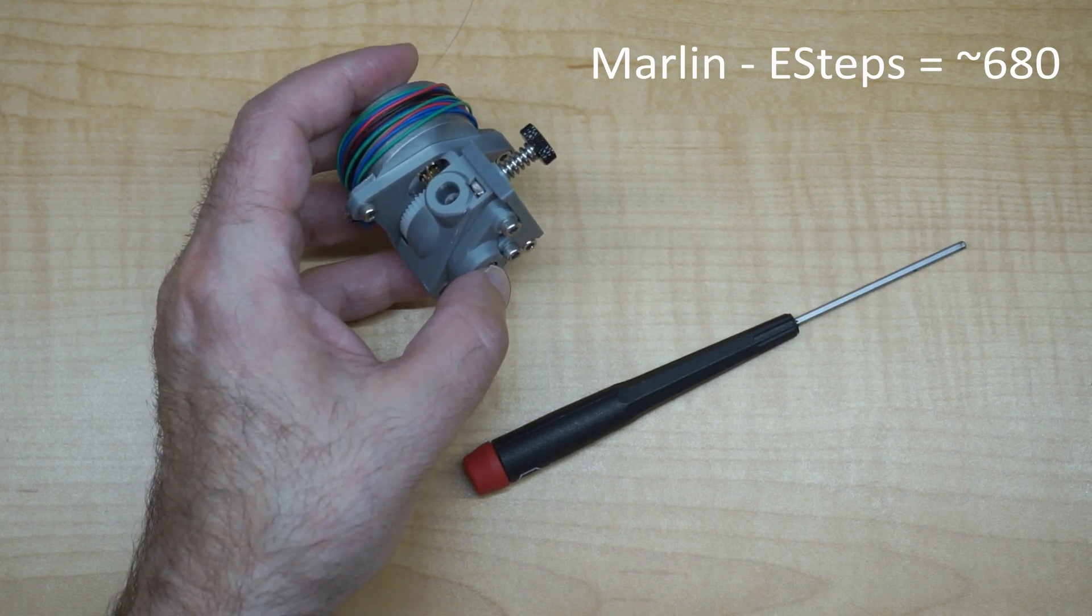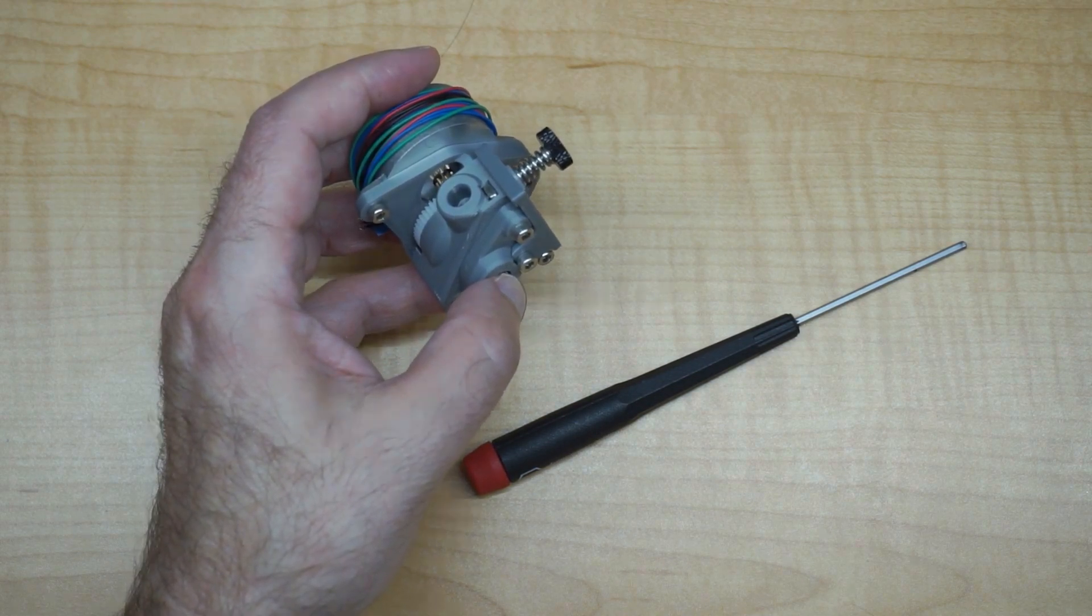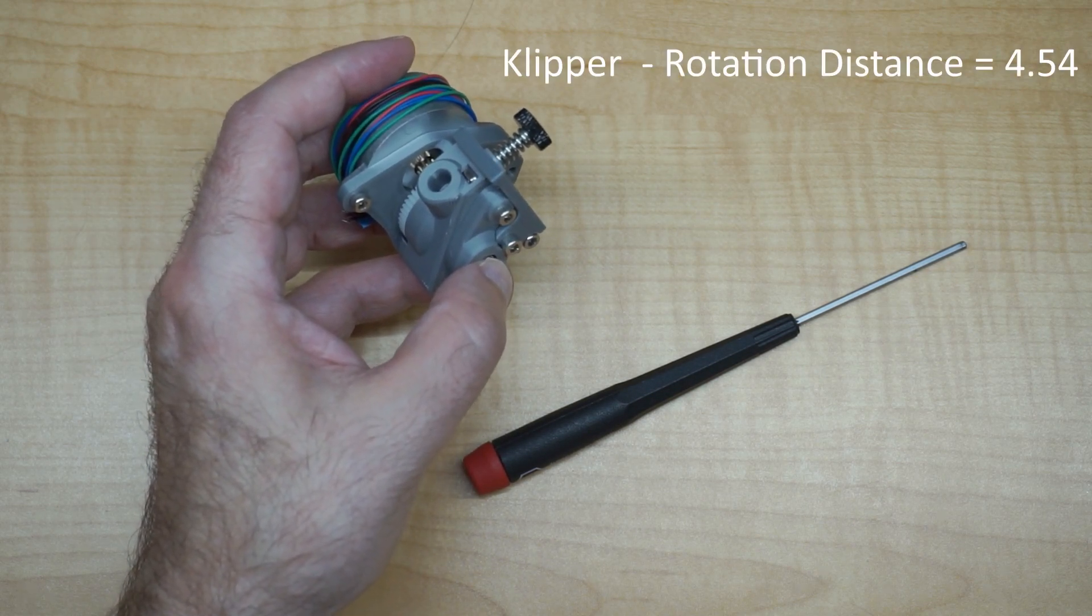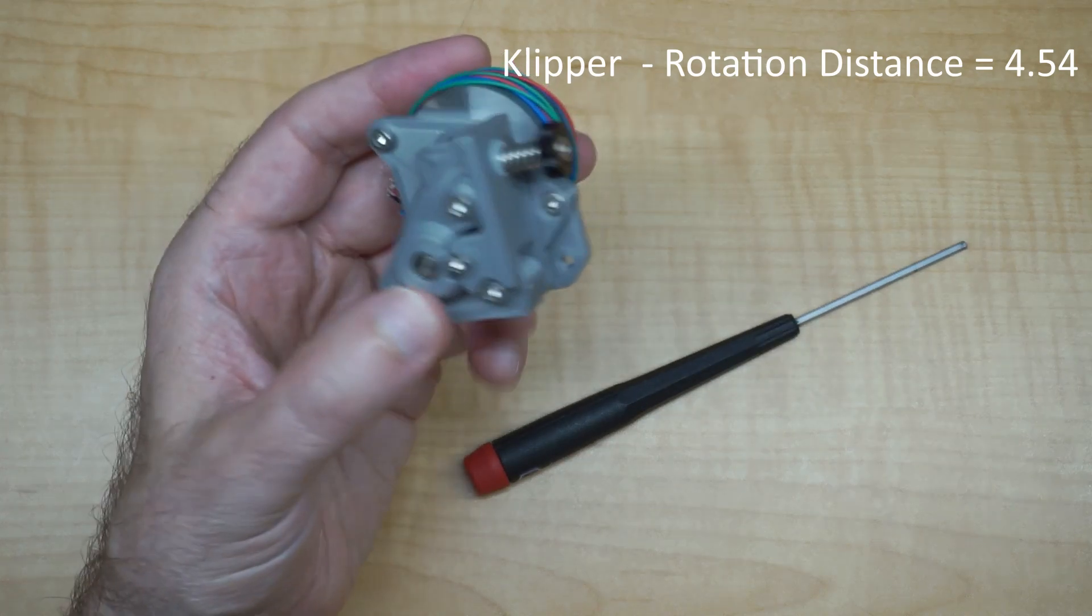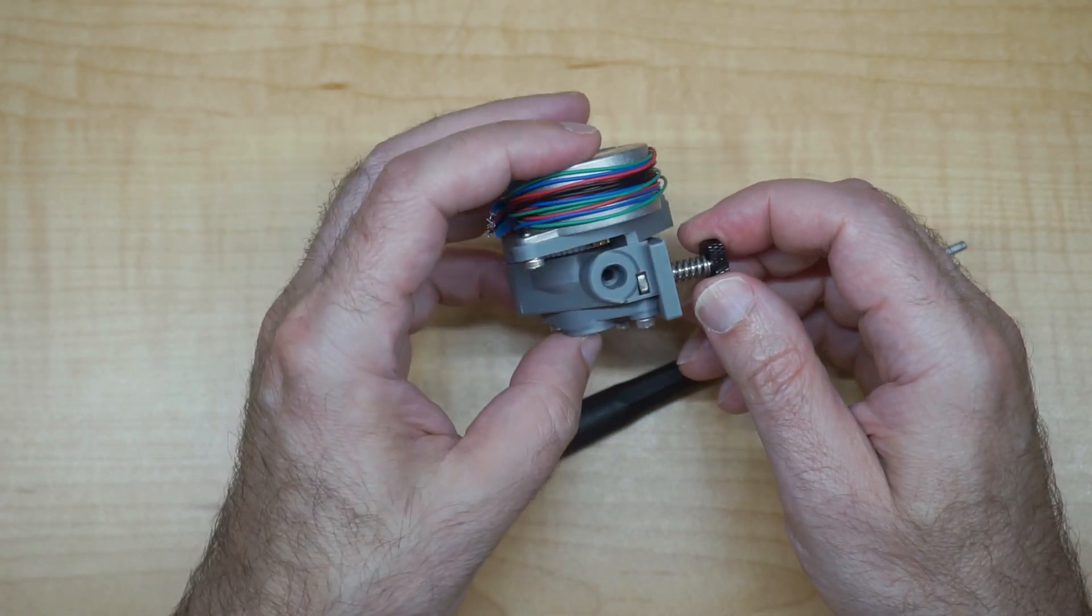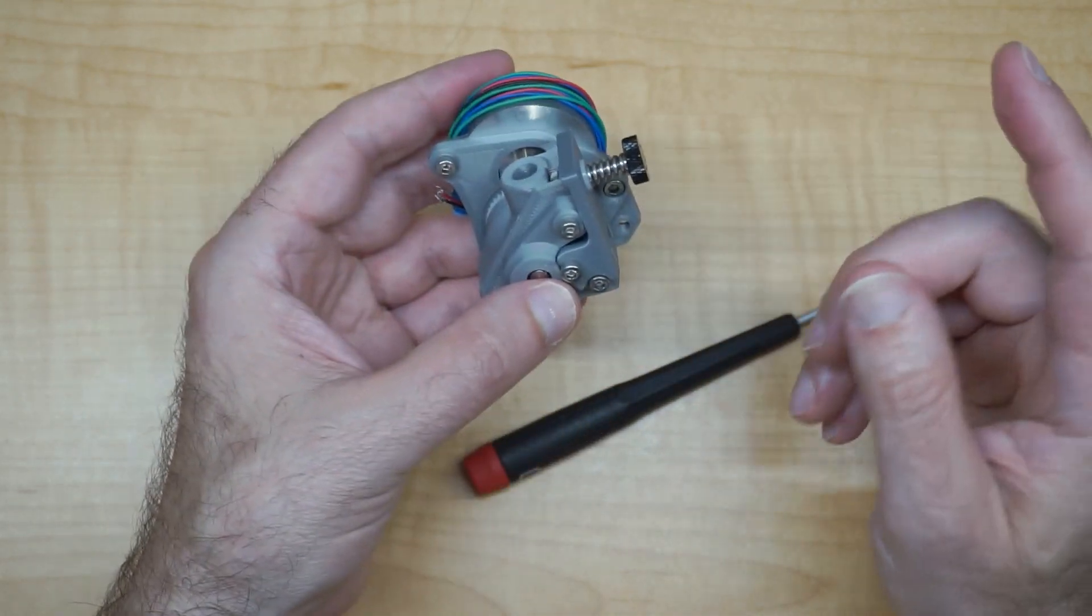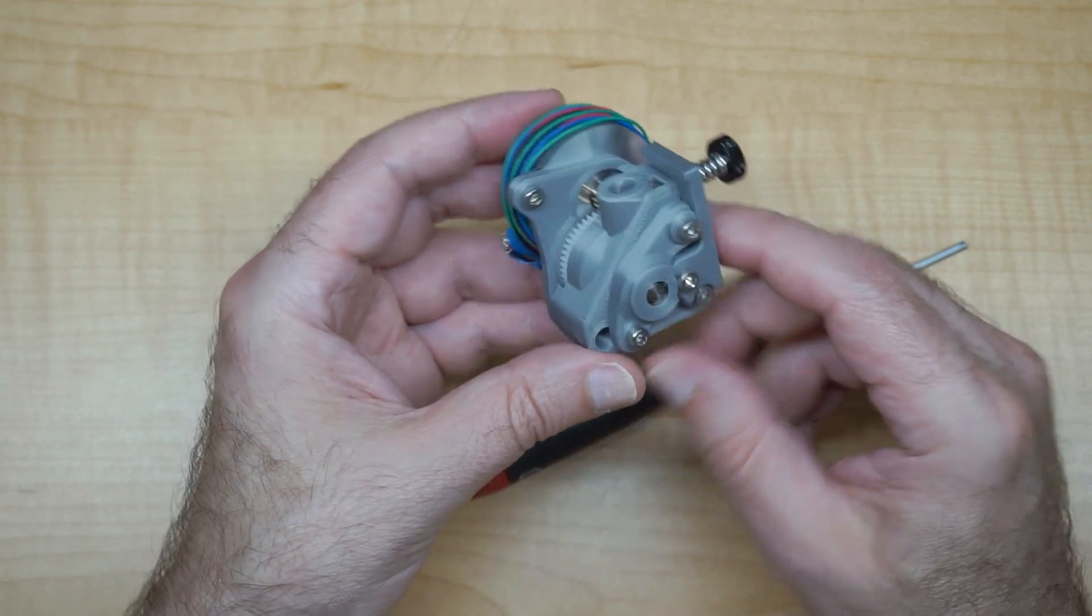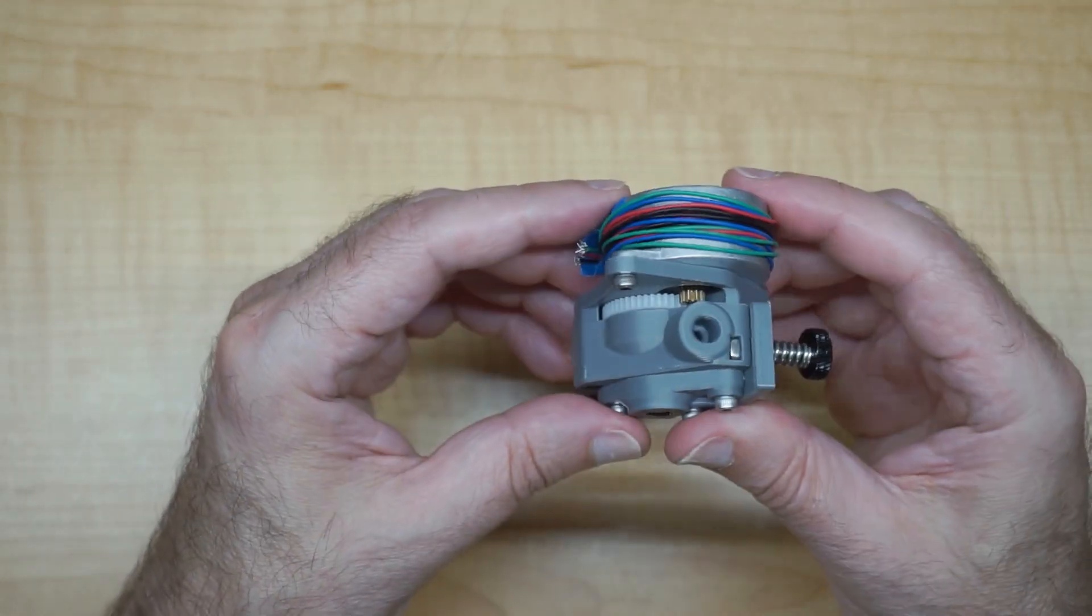On the rat rig they use rotation distance, which is a little different than steps. Currently on the rat rig I think I am at 4.54 for the rotation distance. So if you're using Klipper, use start with 4.54 for a rotation distance on your extruder section on your config file, and for Marlin start at 680 steps for your config.